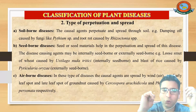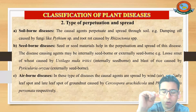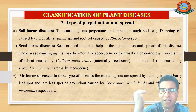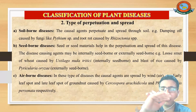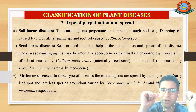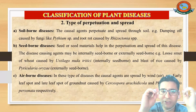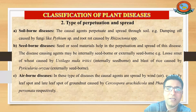If the pathogen lies inside the seed, that is called internally seed-borne disease. If the pathogen is on the surface of the seed, that is called externally seed-borne disease. Seed-borne diseases are those diseases where the perpetuation and spread of the disease occurs mainly through the seeds.